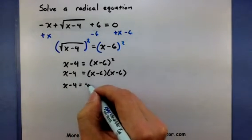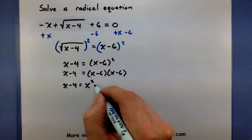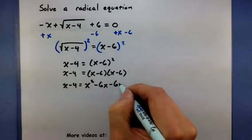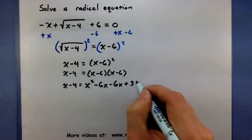So x times x, x squared, minus 6x for the outside, minus 6x for the inside, plus 36.